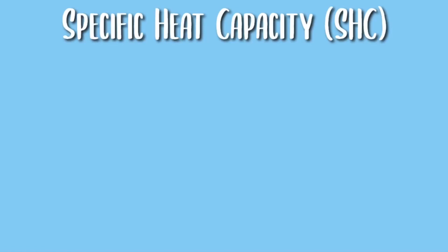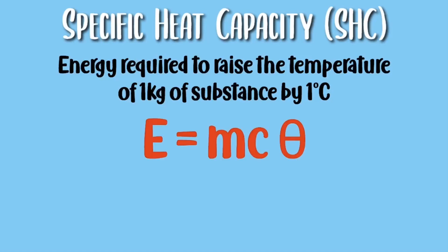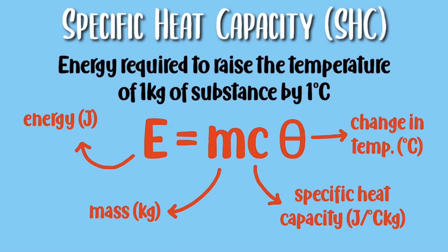Now let's talk about specific heat capacity. The formula is E equals mcθ, where E is the energy measured in joules, m is the mass measured in kilograms, c is the specific heat capacity measured in joules per kilogram per degree Celsius, and θ is the change in temperature measured in degrees Celsius.